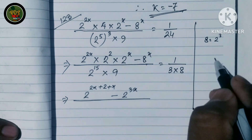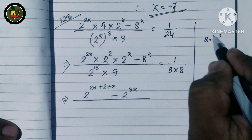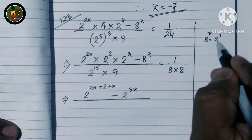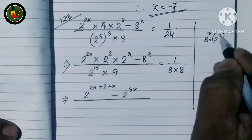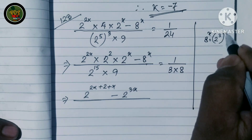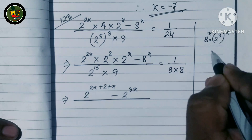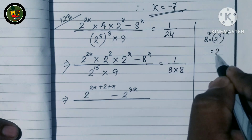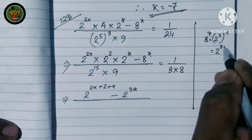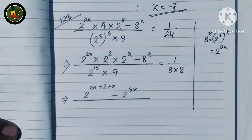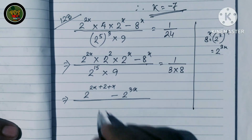8 means 2 cubed. So 8 to the power x is 2 to the power 3, whole to the power x. So we take 2 to the power 3 times x.